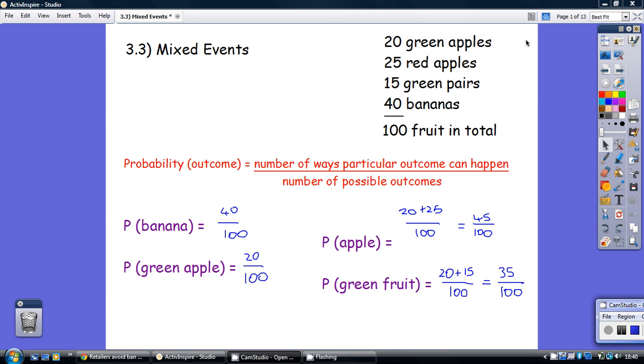Okay, this is chapter 3.3 called Mixed Events. Here we're working out the probability of something happening. The probability, say for example, of getting a banana, is how many bananas are there divided by the total number of fruits you're picking from. It's common sense, really.